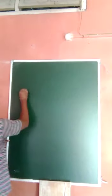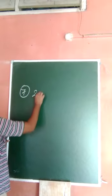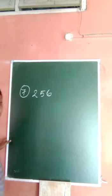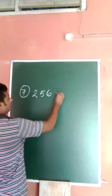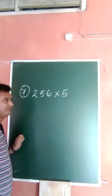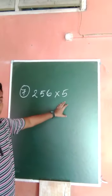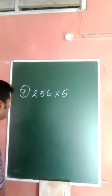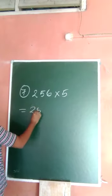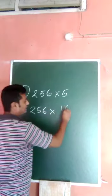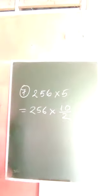Okay, so come to the next question, question number seven. Question number seven is 256 into 5. Whenever there is a 5, 50, like this, then you have to write like this: 5 is one, you can write 10 by 2.